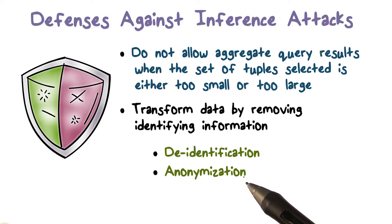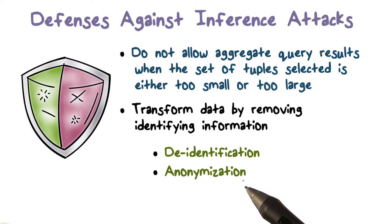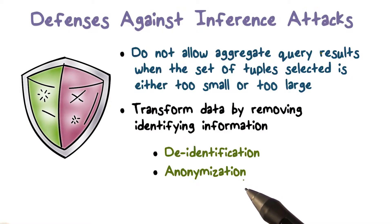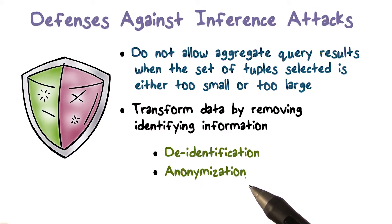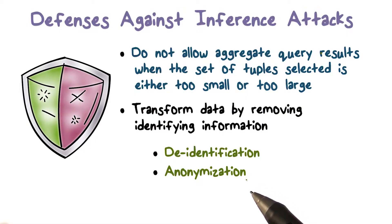One way to address this is anonymization, and one way to do anonymization is what's called generalization — you replace an exact value by a set of values or a range. For example, we may combine junior and senior standing and just say 'upper classmen.' If you only have juniors and seniors, that would avoid the problem where junior standing identified a particular student.